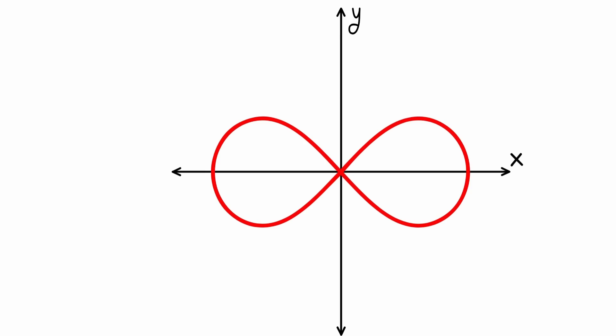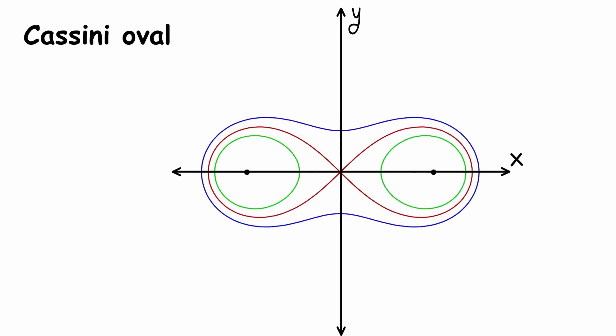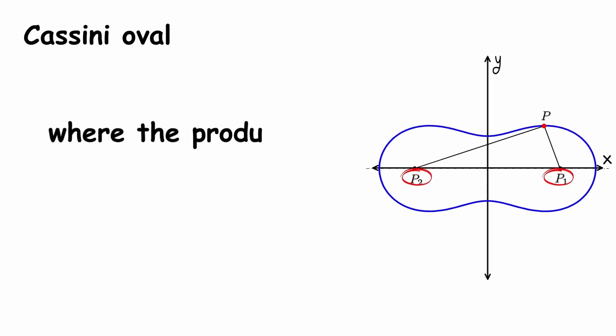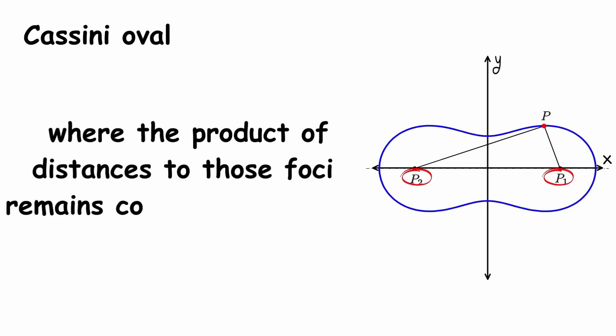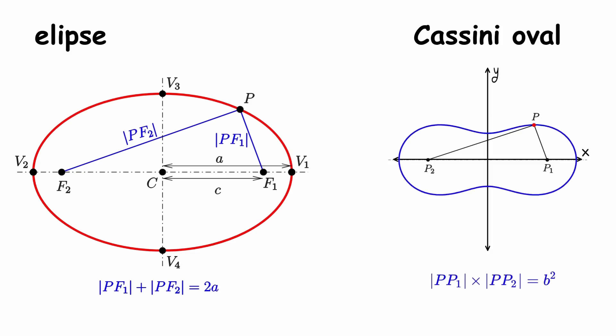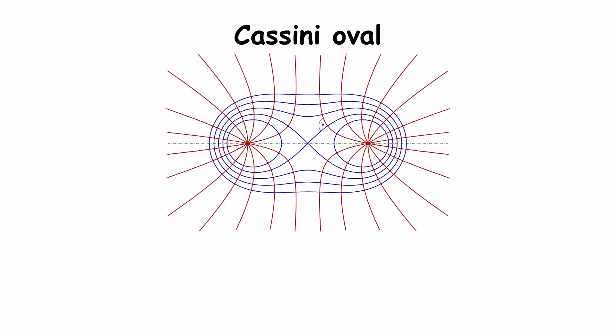The Lemniscate of Bernoulli is a special type of Cassini oval. A Cassini oval is a shape defined by two foci, where the product of distances to those foci remains constant for every point on the shape. This is similar to the definition of an ellipse, but with a Cassini oval, the product of the distances is taken, rather than the sum. Every Cassini oval is an algebraic curve, given by this equation.